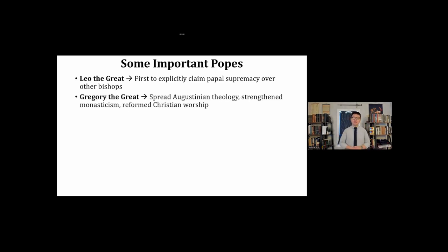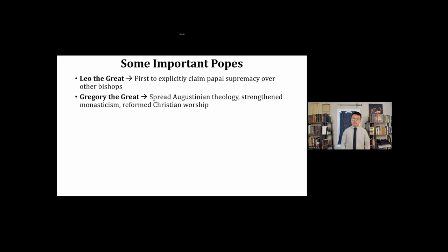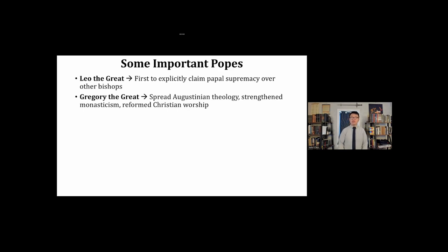In the early Middle Ages, we have Gregory the Great, one of the most important Christian bishops ever. Gregory is a huge proponent of Augustinian theology — he read Augustine's Confessions, The City of God, and other works, and helped spread Augustinian theology throughout the Western Church. He helped strengthen monasticism; Gregory himself was a monk. According to legend, he was really sad when he was forced to become pope, but then decided to make the most of it. He's also remembered for the Gregorian chants and helping reform and standardize Christian worship across the Western Christian world.